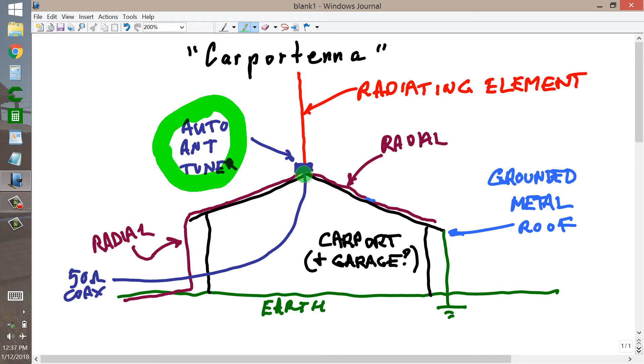Then for each band install a quarter wavelength radial and install two of them for each band you intend to use. Measure a quarter of a wavelength according to the formula length in feet equals 234 divided by the frequency in megahertz. So this would be in feet and this would be in megahertz. So for example at 7 megahertz it would be about 33 feet. For 3.5 megahertz it would be about 66 feet.